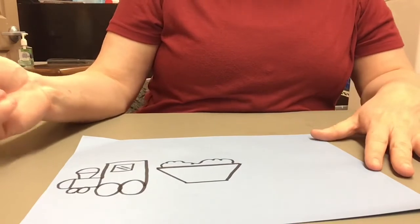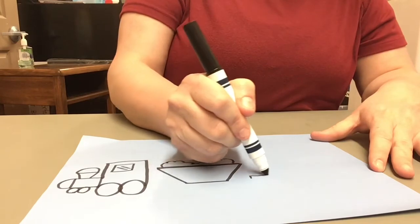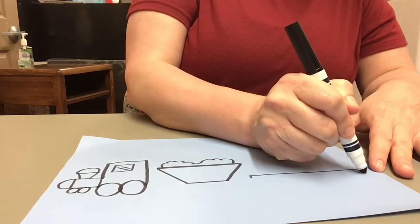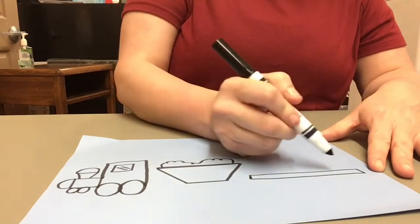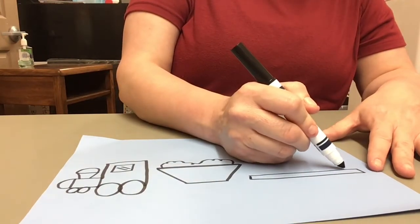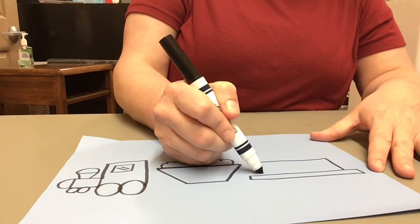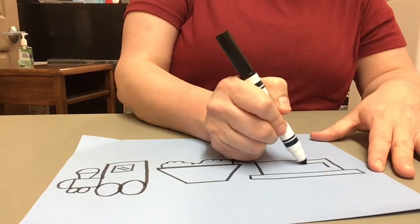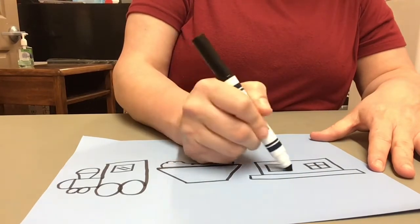Then finally, let's do the caboose. The caboose is going to have a long skinny rectangle. Off of the rectangle we're going to build the house part where the train workers would stay. So we're going to give them a couple windows to look out of.